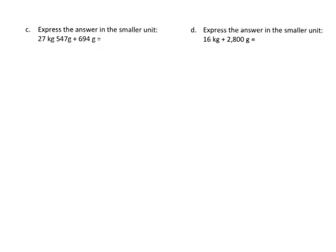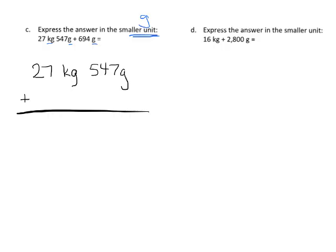All right, for these, we're being asked to add and express the answer in the smaller unit, meaning since we've got kilograms and grams, the smaller unit is going to be in terms of grams. So let's add. There's a couple of ways we could do this. One way is to say, let's take the 27 kilograms and the 547 grams, and we're going to add 694 grams.